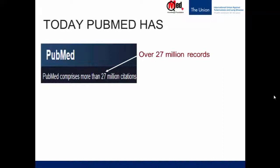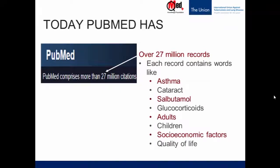PubMed today has over 27 million records — it's a huge database. Every bibliographic record contains words like some of those listed here. The first two are disease terms, the third and fourth are drug terms, the fifth and sixth are population terms, and the last two are generic terms. Most bibliographic records of articles contain a mix of all these kinds of terms.